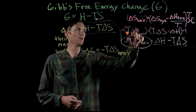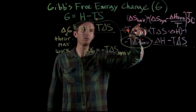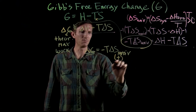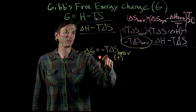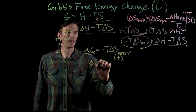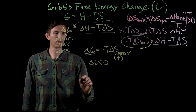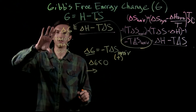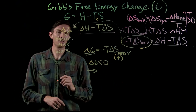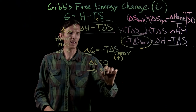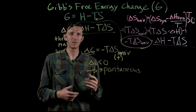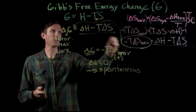What does that mean for using Gibbs free energy to predict spontaneity? We know that the universe's entropy must increase for a reaction to be spontaneous, so ΔS_universe must be positive. Since temperature is an absolute temperature and always positive, the only way to have a spontaneous process is if ΔG is less than zero. So ΔG < 0 tells us the reaction is spontaneous.